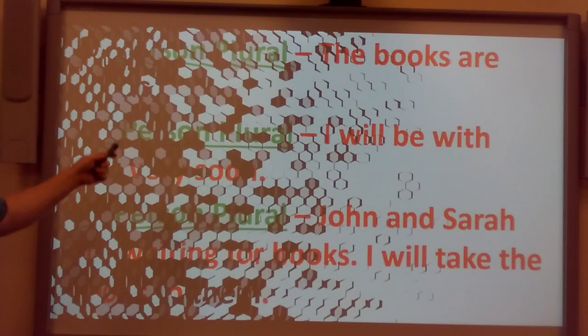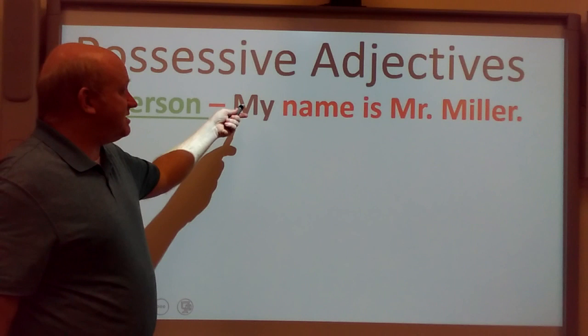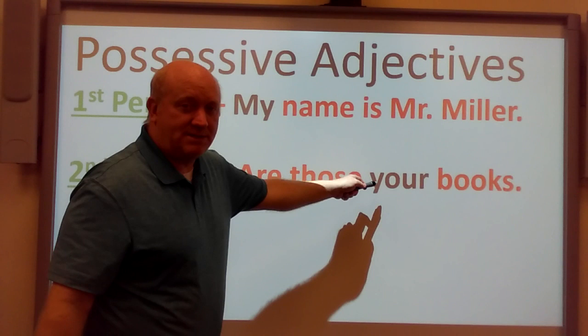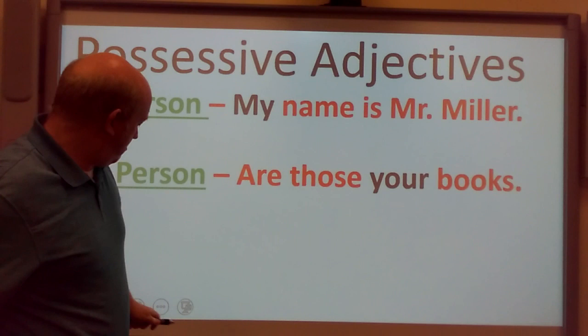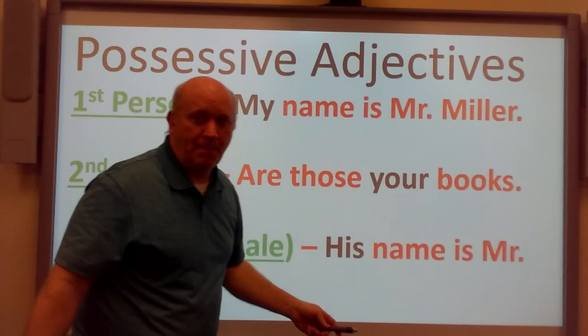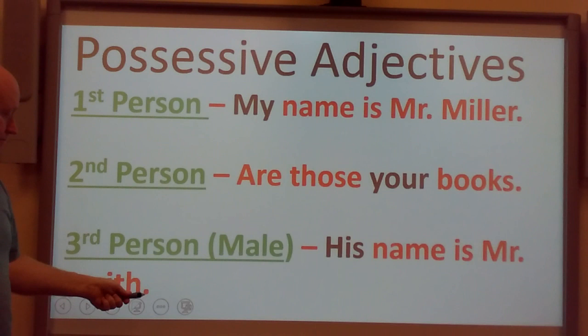Now we're going to be looking at possessive adjectives. First person: 'My name is Mr. Miller.' 'My' is possessive — the name belongs to me. Second person: 'Are those your books?' 'Your' is possessive referring to books. Third person, male: 'His name is Mr. Smith.' Since Mr. Smith is a masculine name, 'his' is the possessive — whose name? His name — Mr. Smith.